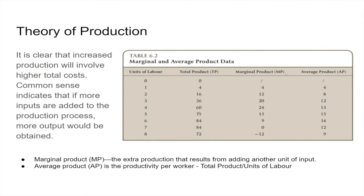That really doesn't tell us how much added output we're getting from one level to another. We can calculate that using marginal product. Marginal product measures how much growth we have from one to two to three to four workers. It measures the difference between consecutive output levels: zero to four is four, four to 16 is 12, 16 to 36 is 20, and so on.